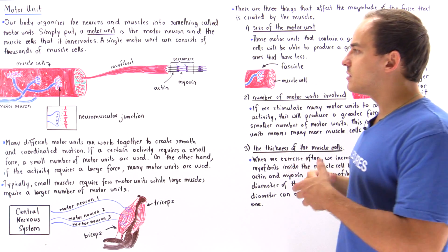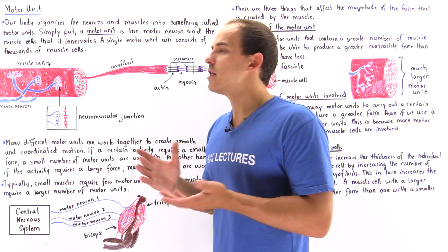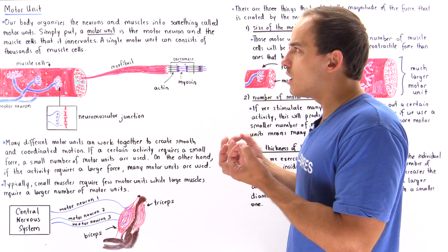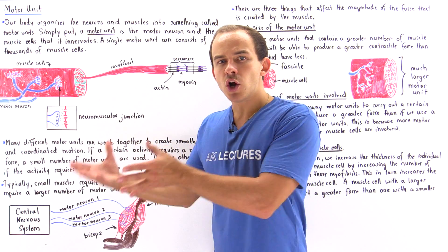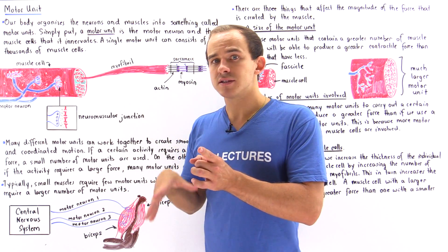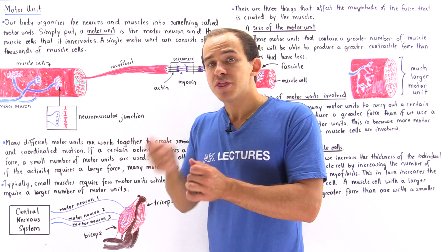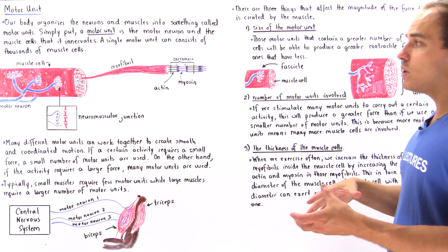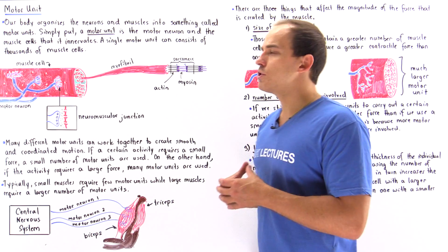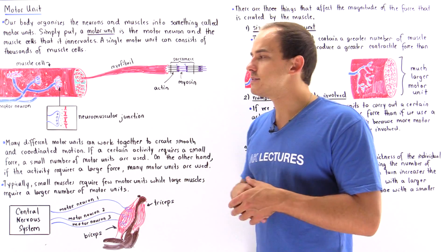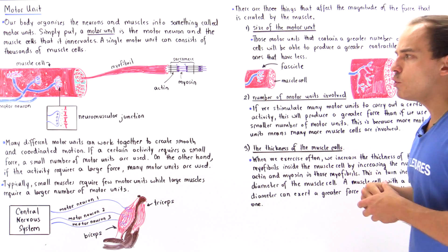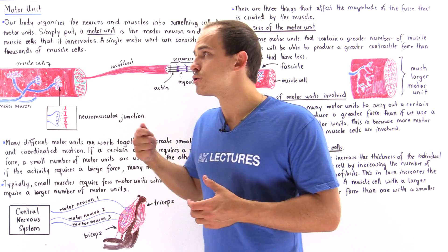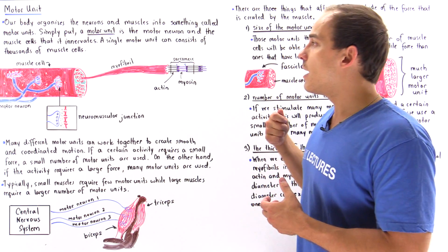So this concludes our discussion on the motor unit. The motor unit is nothing more than the motor neuron as well as all the muscle cells that that particular motor neuron controls. We have different types of motor units found inside our body, and these motor units work together to create coordinated and smooth motion.